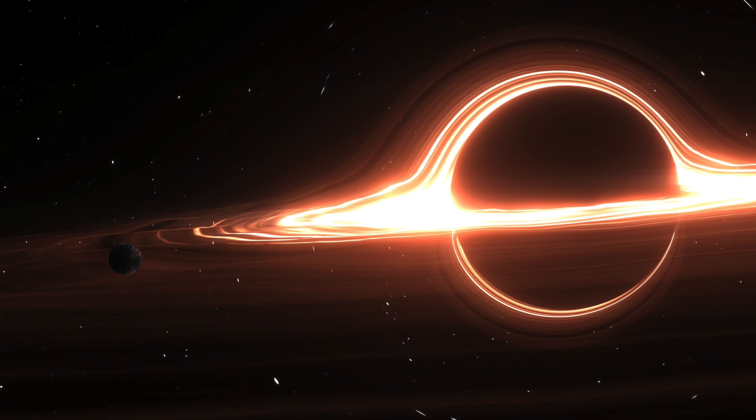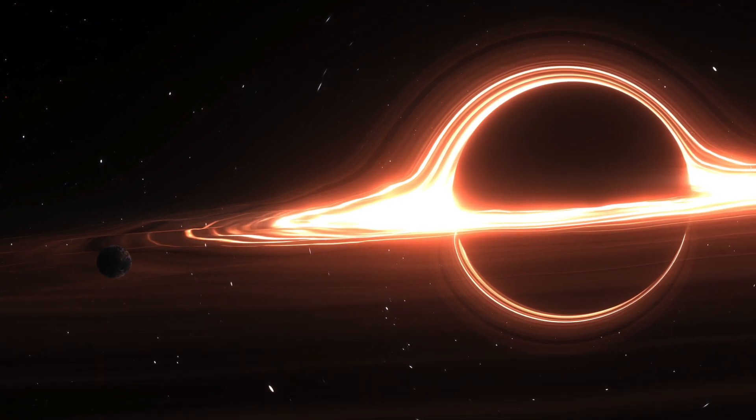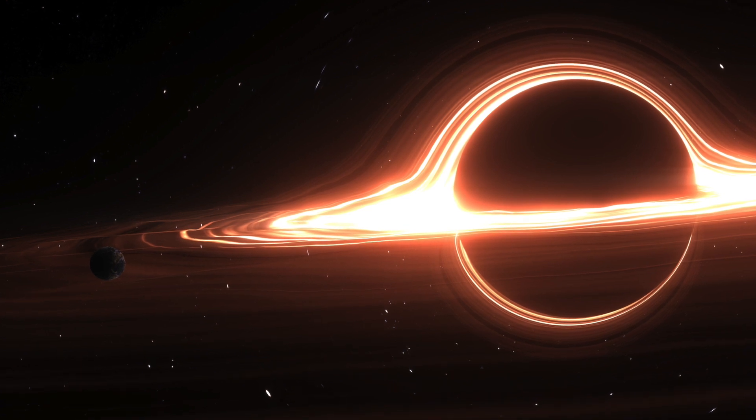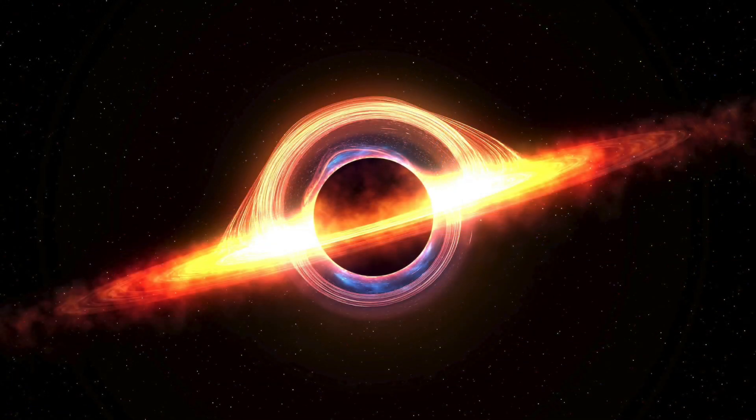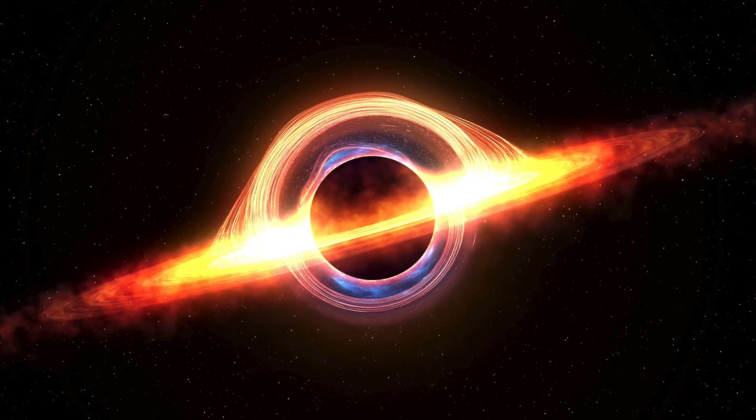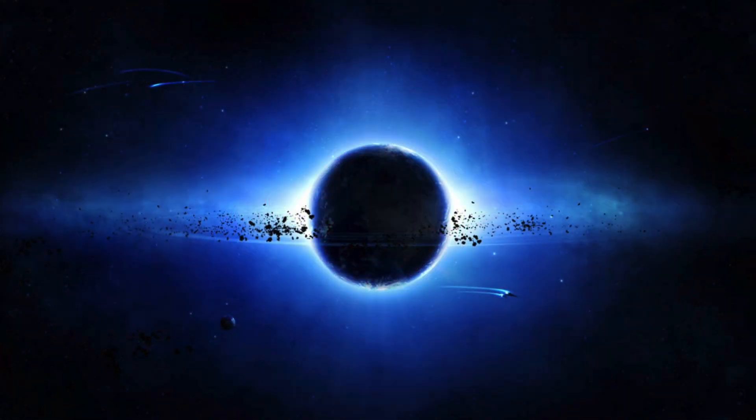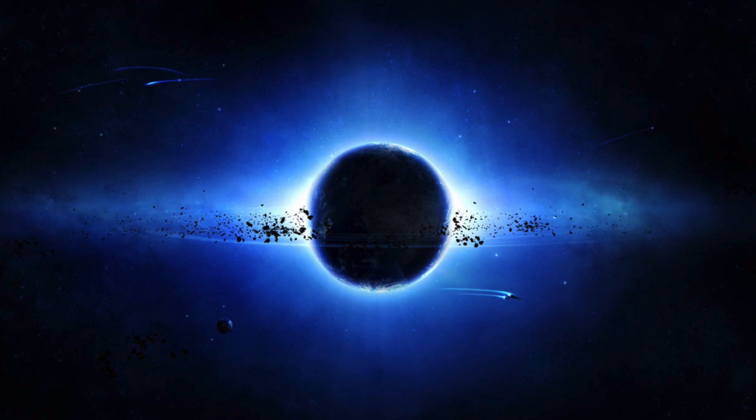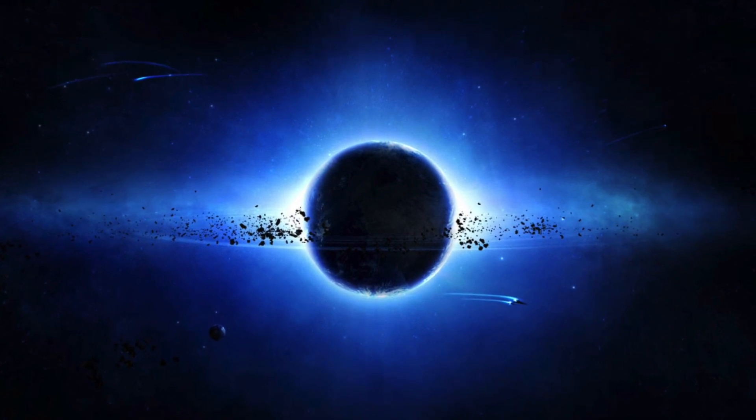According to Einstein's theory of general relativity, a black hole that is created from the cosmically quaking collisions of two giant black holes should ring after the collision. This ringing should produce gravitational waves just as how a bell produces sound waves after ringing. Einstein expected that a particular pitch and decay of the gravitational waves should point to a new black hole's spin and mass.